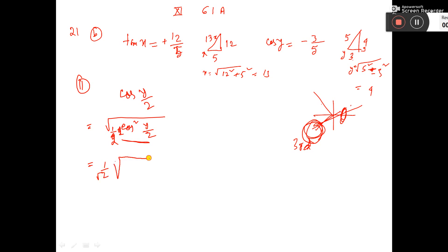1 by root 2 will come outside. Now, 2 cos square theta formula is 1 plus cos 2 theta. 2 into y by 2, that is only y.